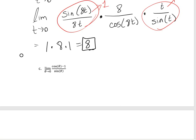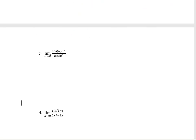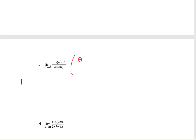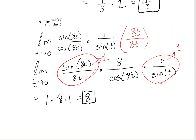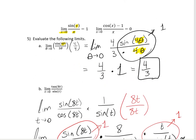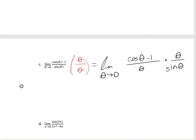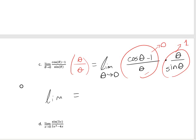On the next one, we have the limit of cosine of theta minus 1 divided by sine of theta. I'm going to multiply by theta over theta, which gives me cosine of theta minus 1 over theta, times theta over sine of theta. Since sine of x over x goes to 1, theta over sine of theta also goes to 1, and cosine of theta minus 1 over theta goes to 0. So overall, this limit equals 0.